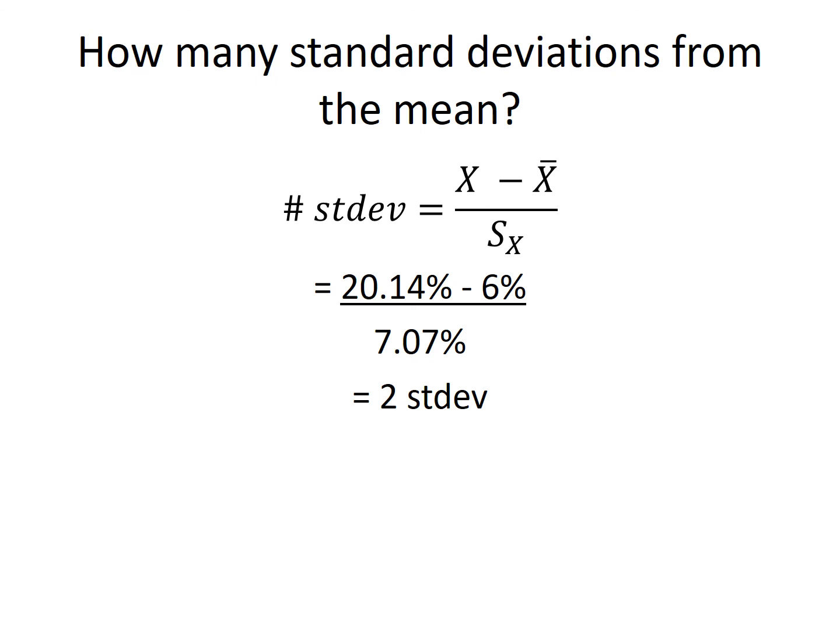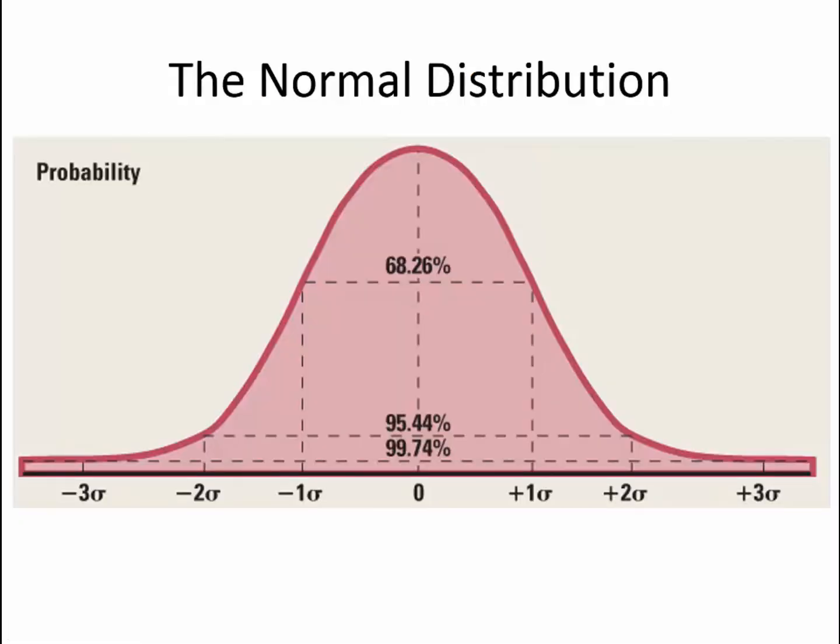20.14% minus the mean of 6% gives us 14.14% divided by the standard deviation of 7.07% tells us that we are 2 standard deviations above the mean in the normal distribution.